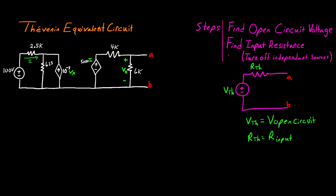Now that we've gone over what a Thevenin equivalent circuit is, let's talk about the steps involved in finding the model. The first step is to find the open circuit voltage — that's just the voltage we see at our point of interest when there's nothing connected. The reason we want to find the open circuit voltage is because we're trying to model this component, and we don't want a voltage drop across that Thevenin resistance. So if there's no current going through that resistor, this node we can label V_Thevenin, and this node is V_Thevenin as well, because without current through the resistor we don't have a voltage drop across it.